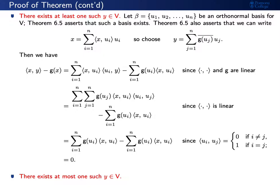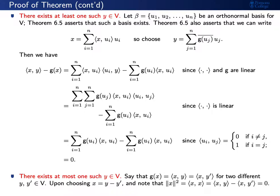Now let's talk about the other direction: why does there exist at most one such y? Let's say that perhaps there are two — that is, g of x equals the inner product of x and y, and maybe also equals the inner product of x and y prime, for two different y and y prime. Let's now choose x to be y minus y prime. A quick identity shows that the square of the norm of x must be zero, but the norm is a non-degenerate function, so we see that x has to be the zero vector, showing that y equals y prime. That is, there is at most one such y.